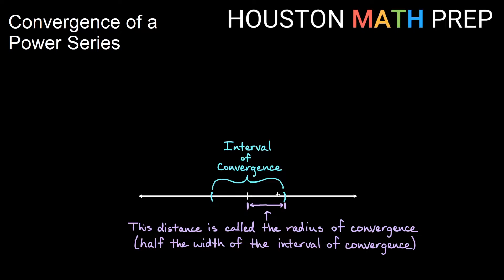Here's my center, and we have some sort of symmetric interval on both sides about that center. The distance from the center out to the edge of the interval of convergence is called the radius of convergence — that's halfway across the interval. So if we know the radius of convergence, we can go out that distance in both directions from the center to determine our interval, and vice versa.